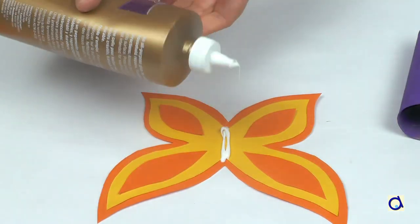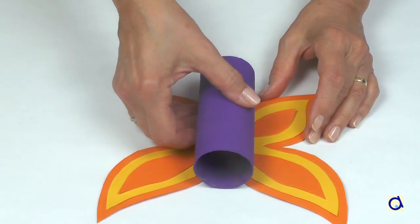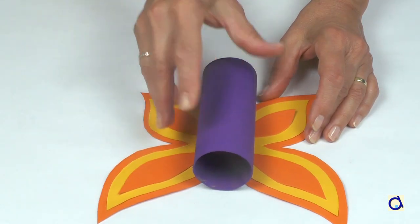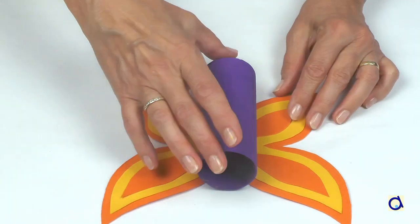Put white glue in the center of the wings and glue the tube in place. Encourage children to use different colours to create their butterfly.